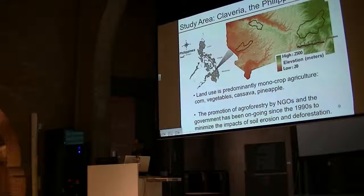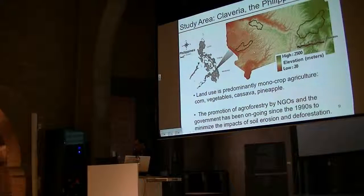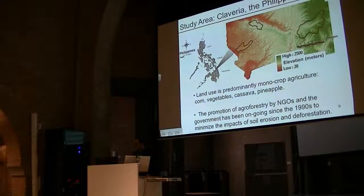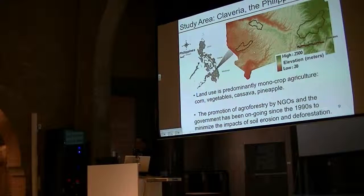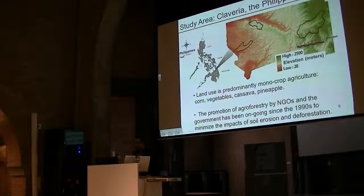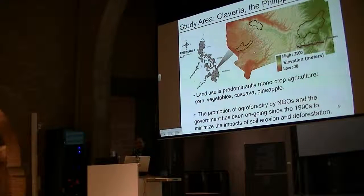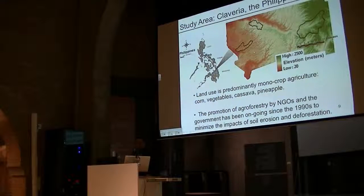This is our study area — basically monocropping agriculture of corn, vegetables, and cassava. High elevation is 2,500 meters. For the past 20 years, we have been promoting agroforestry in this area, helping them plan the upland area to minimize the effects of soil erosion and deforestation. But we were using commercial software for this. My university has developed their own erosion models, but after the work we're doing, we want to return the results to the local authority — that's why we're using MapWindow.